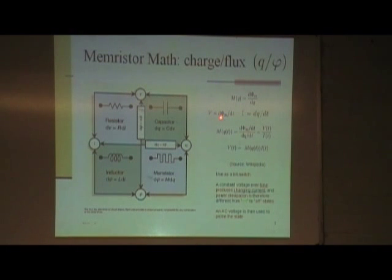We've got voltage is the derivative in time of magnetic flux, and current is the time derivative of electrical charge. So they say that memristance is the derivative of flux in charge.